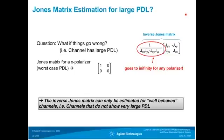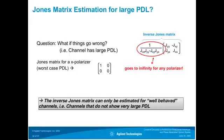Before looking at results, consider what happens with a large PDL on the transmission channel. As a worst-case example, take an X-polarizer as the channel: the Jones matrix has only a '1' in the X position, so only the X polarization is preserved. Calculating the inverse, the denominator goes to zero — the inverse channel matrix diverges and goes to infinity. You cannot calculate the inverse of a polarizer. Therefore, the inverse channel matrix can only be calculated for a well-behaved channel — one that does not have very large PDL.